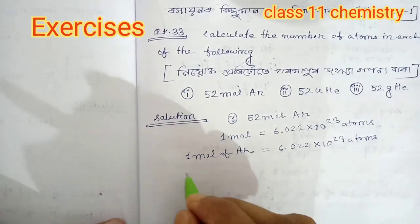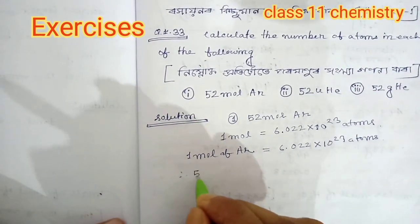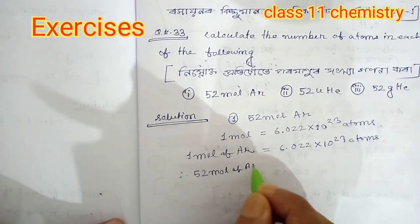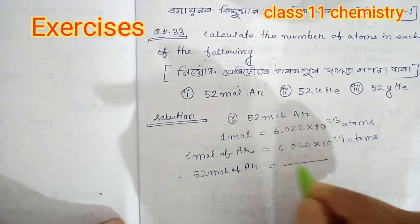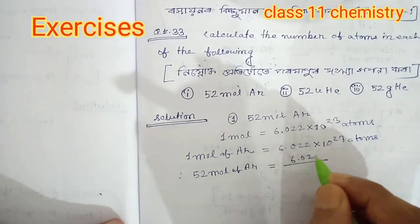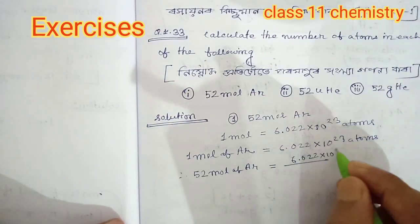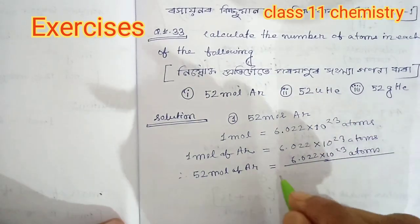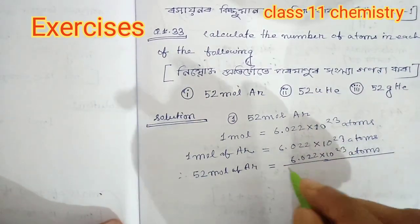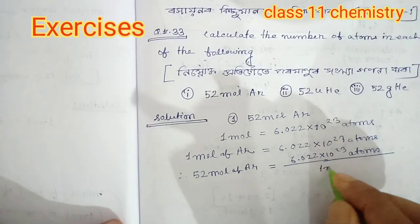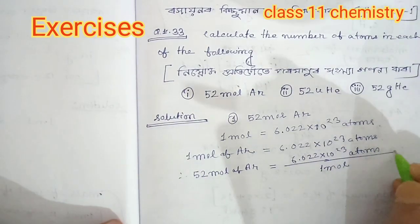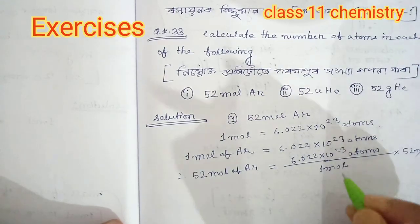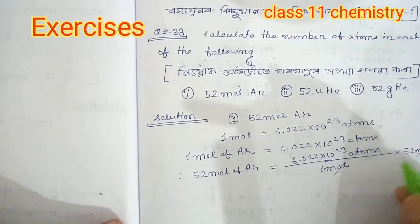This is the number of atoms in each. It is 6.022 into 10 to the power 23 atoms divided by one mole into 52 — cancel one, it will be...